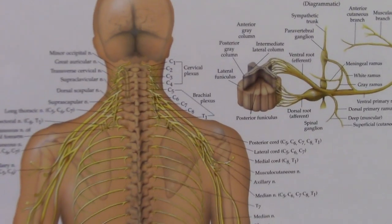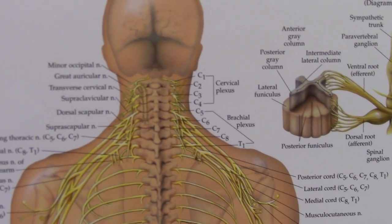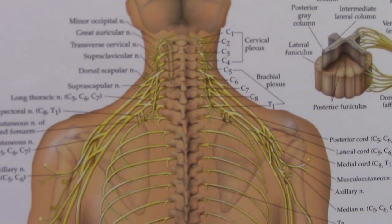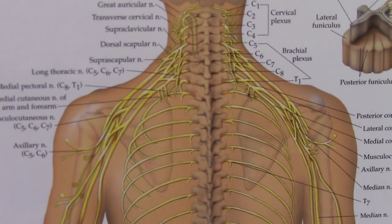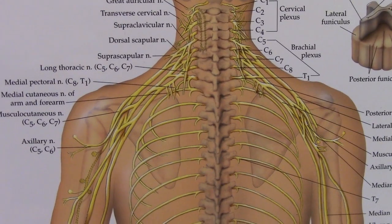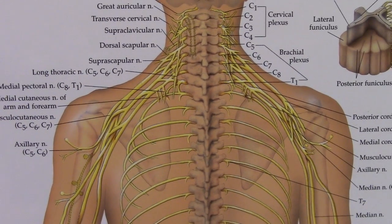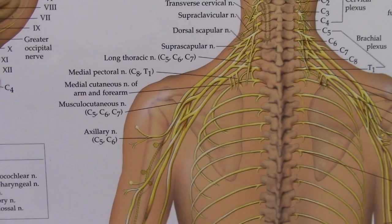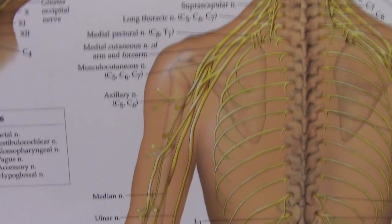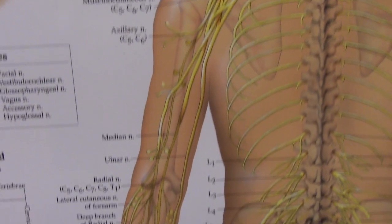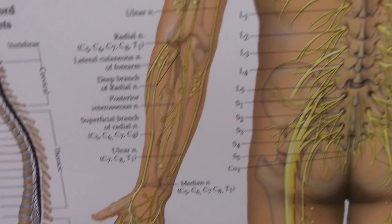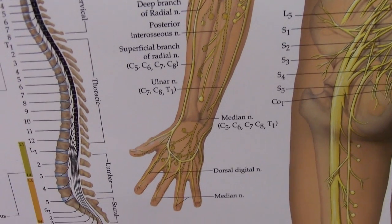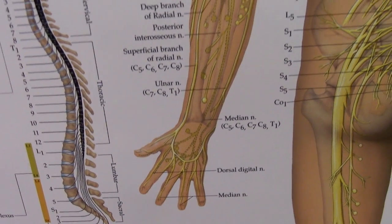In the cervical spine, there are eight nerve rootlets that branch out from either side, and as they proceed downwards into the arm, they combine into what are called the cervical plexuses. From there, the plexuses turn into the major nerves that innervate the arm: the median nerve, the ulnar nerve, and the radial nerve.